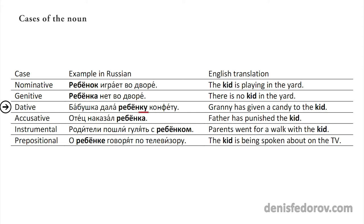Dative case: бабушка дала ребёнку конфету — granny has given a candy to the kid. Accusative case: отец наказал ребёнка — father has punished the kid.